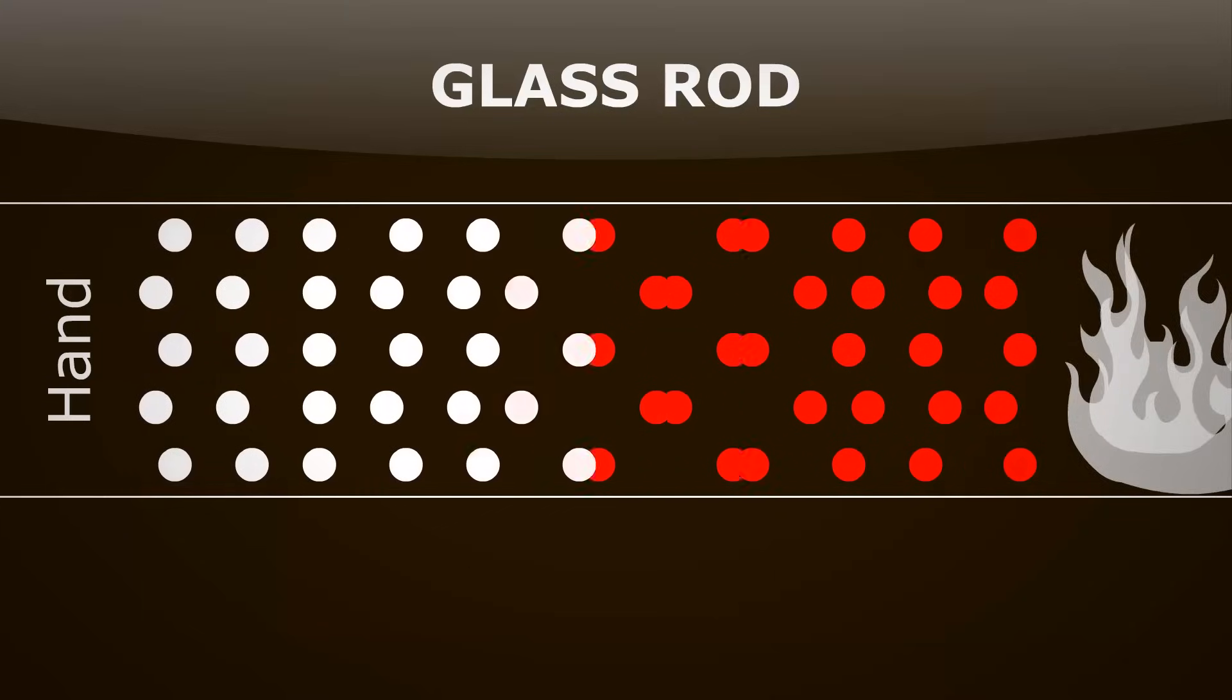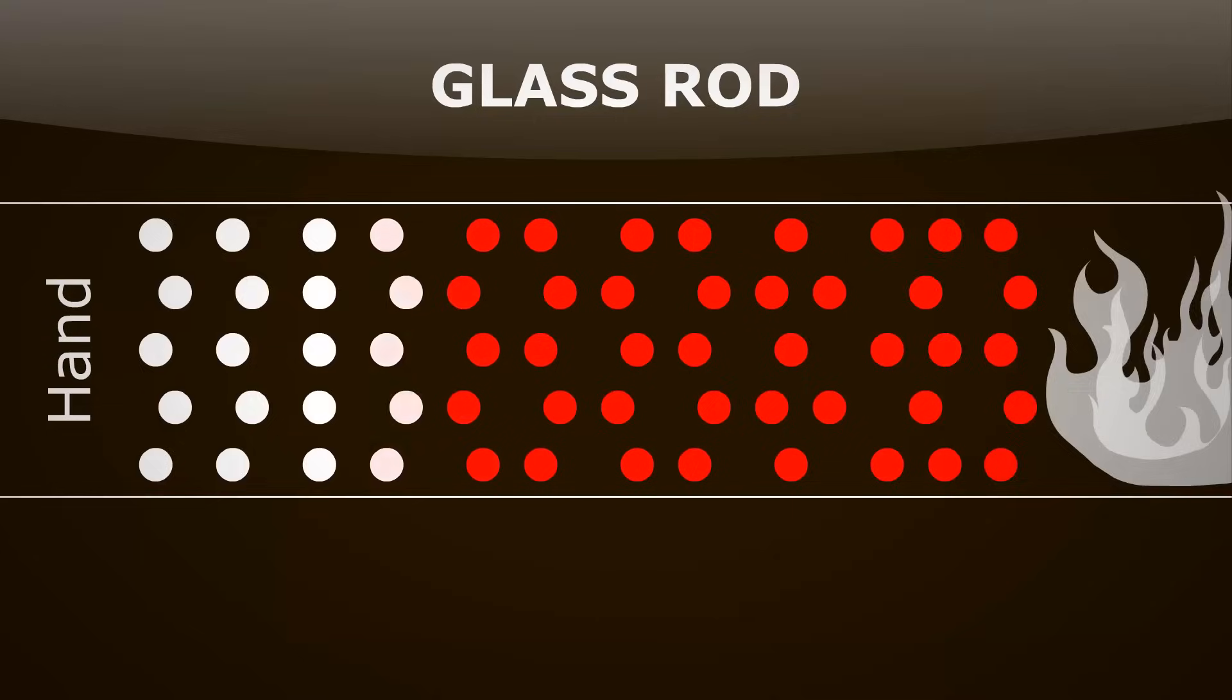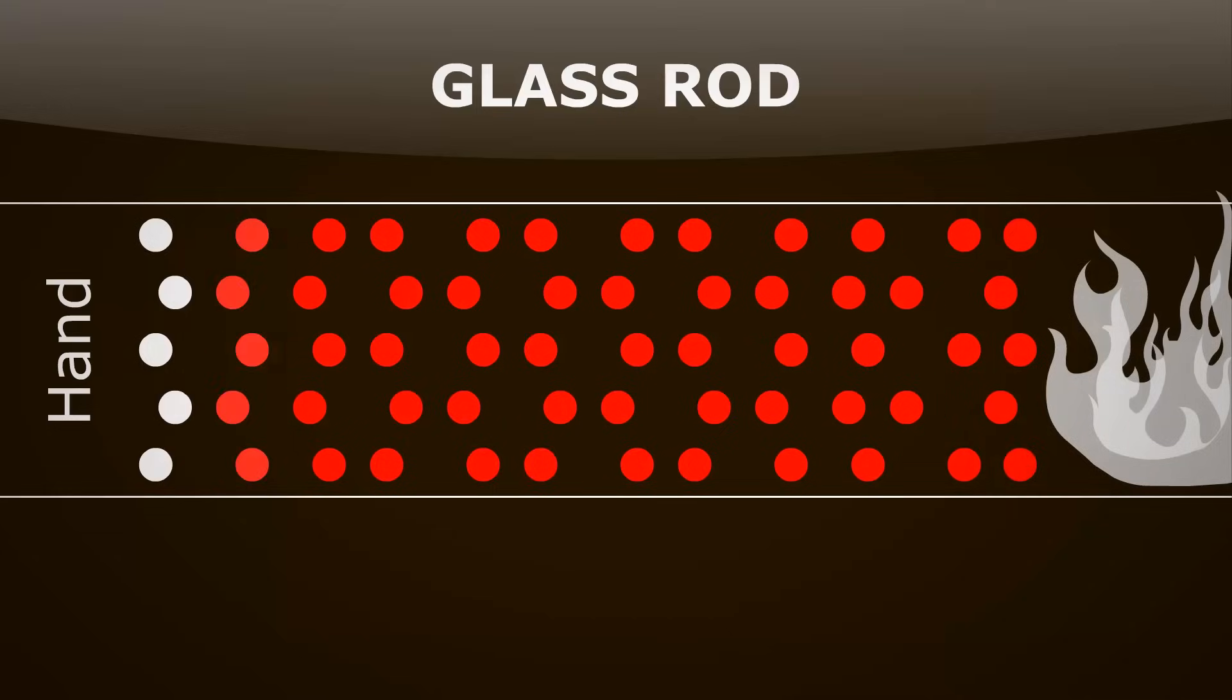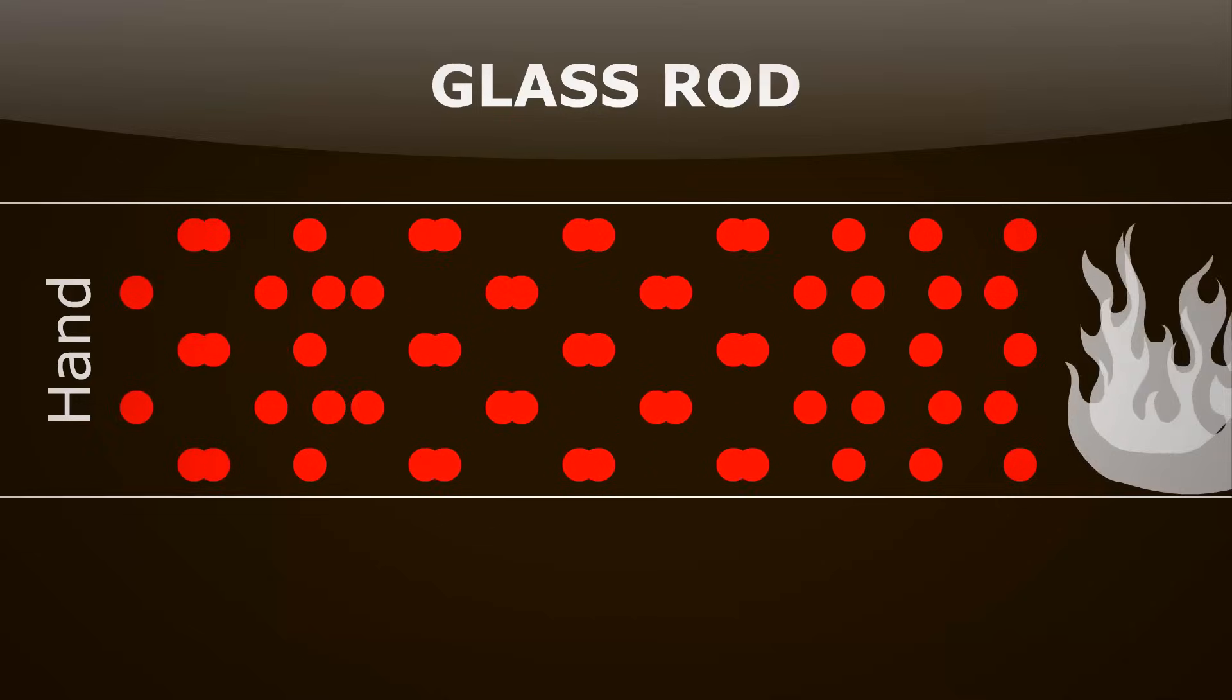And slowly, down the rows, each particle vibrates more and more vigorously, passing on heat to the next one through collisions. So it progresses slowly through the glass.